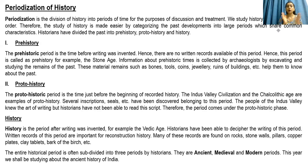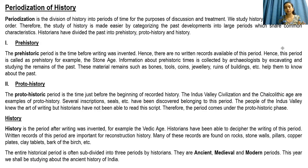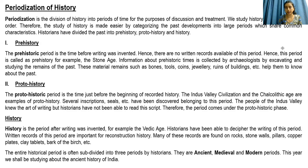Now coming to the periodization of history. If we see history as a whole, it is a huge thing. So to have a better understanding, historians have divided the entire history into three divisions: prehistory, proto-history, and history. Prehistory means that period of time when people did not know how to read and write — that is the period of the cavemen, also known as the stone age. People habitated in jungles, did not have proper clothes, and did not know how to read and write. That period of time falls under the category of prehistory, meaning no written records can be found and no knowledge was there at that point of time.